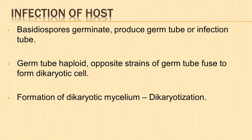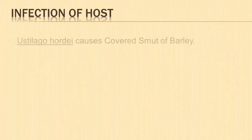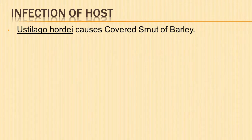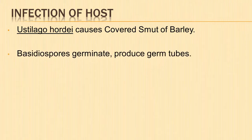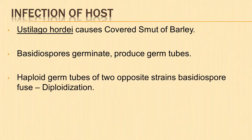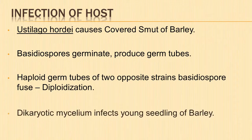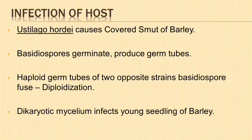Dikaryotization is brought about differently in different species of Eustilago. Eustilago hordei causes covered smut of barley. The basidiospores germinate in the soil or on barley grains by producing germ tubes. Diploidization occurs when the haploid germ tubes of two opposite strain basidiospores fuse; one of the tubes becomes dikaryotic and can infect the young seedling of barley.